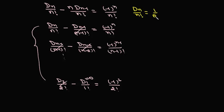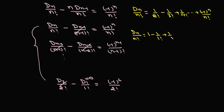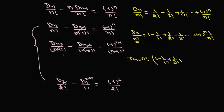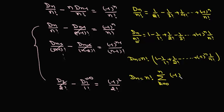After the telescoping summation, we get D(n)/n! = 1/2! - 1/3! + 1/4! + ... + (-1)^n/n!, which can also be written as D(n)/n! = 1 - 1/1! + 1/2! - 1/3! + ... + (-1)^n/n!. Multiplying both sides by n!, we arrive at D(n) = n! · Σ(k=0 to n) [(-1)^k / k!], which is exactly the derangement formula we needed to prove.